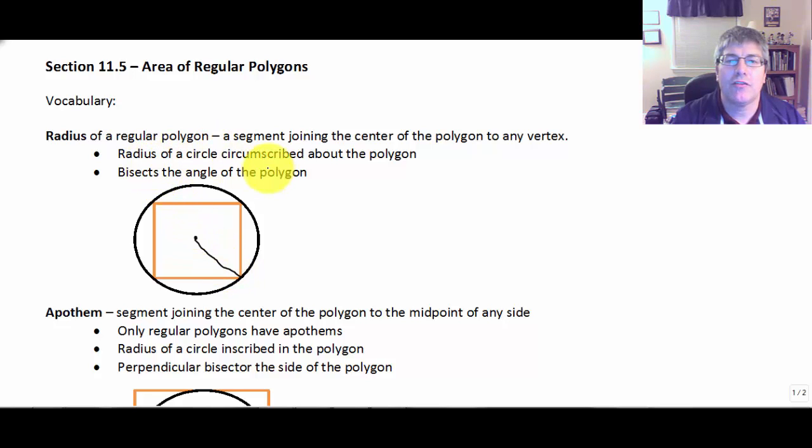And it is the radius of the circle circumscribed about the polygon. So it's the radius of the circle around the outside of the polygon. It also bisects the angle of the polygon. So for this square, of course, that will split those two angles to 45 degrees each.